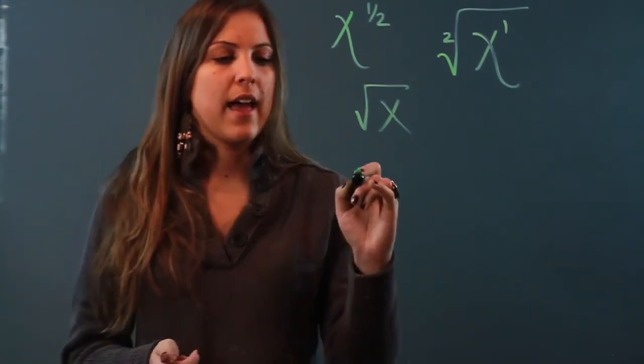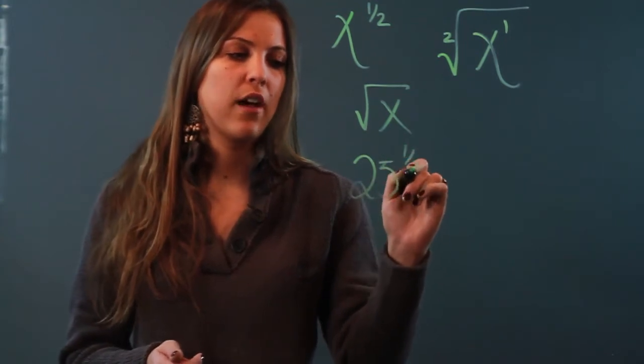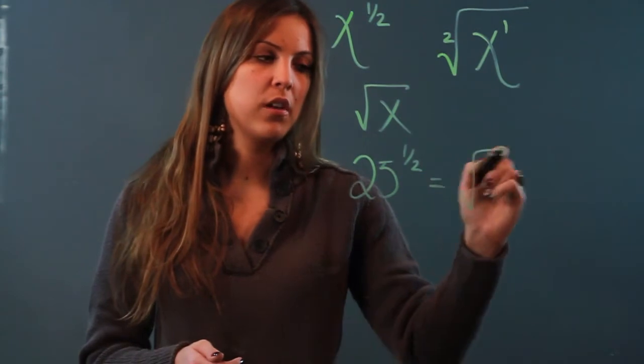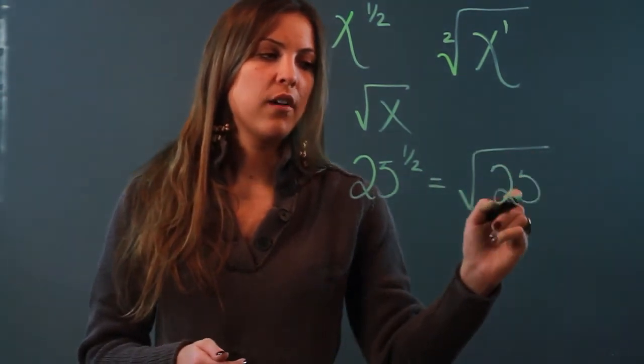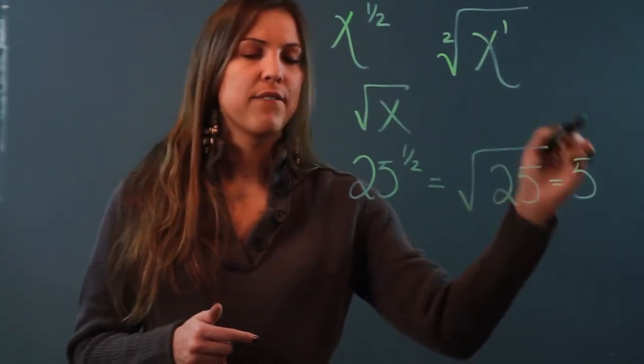Let's do that with a number. Let's say I had 25 to the one-half. The denominator becomes my root, so it's the square root of 25 to the first power, which is just 25. So it's the square root of 25, which is 5.